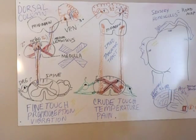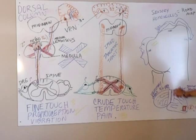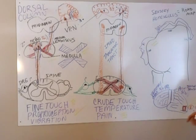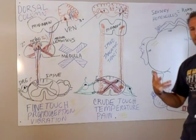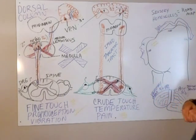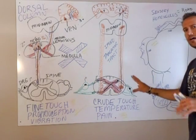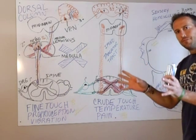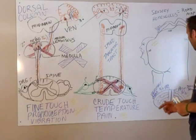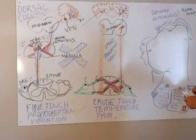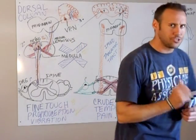Looking at the cortex, here's your central gyrus. You have a precentral gyrus in the front and postcentral gyrus in the back. The precentral gyrus is involved in voluntary motor control. Looking at Brodmann's areas — a mapping of the brain where different areas are labeled accordingly — the precentral gyrus is areas 4 and 6, and the postcentral gyrus is areas 3, 1, and 2, which is involved in somatosensory processing.